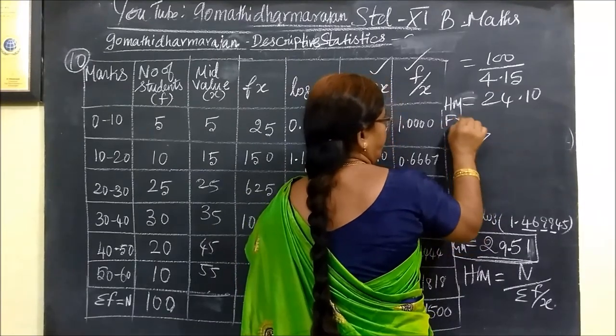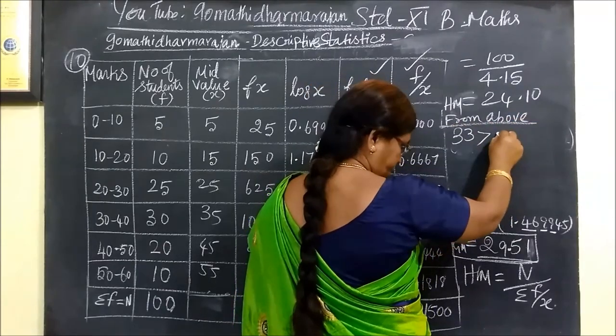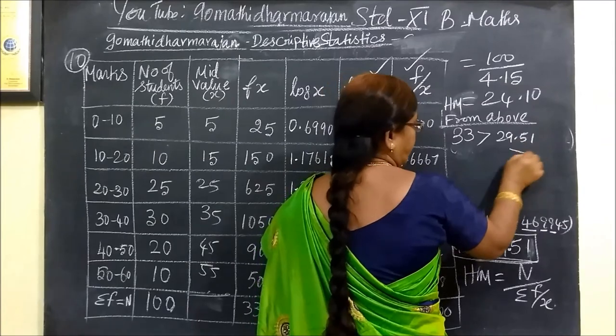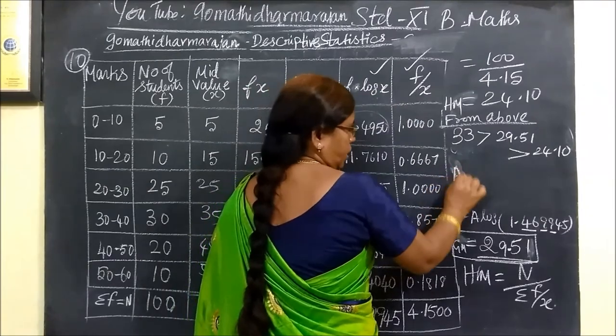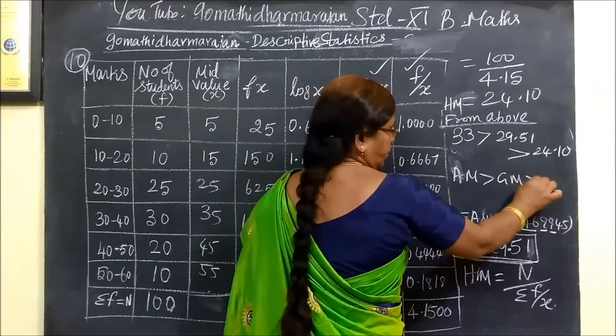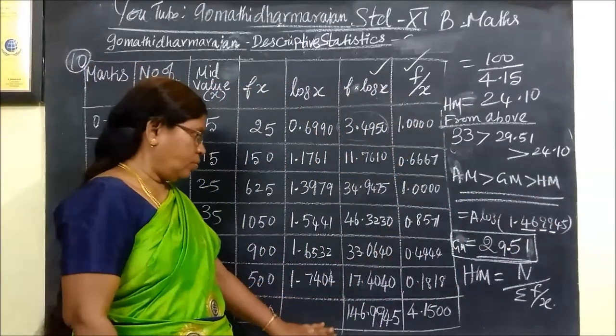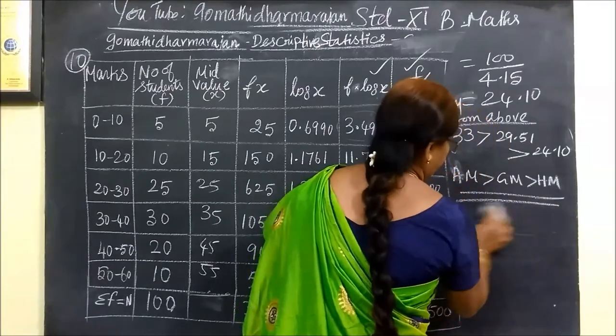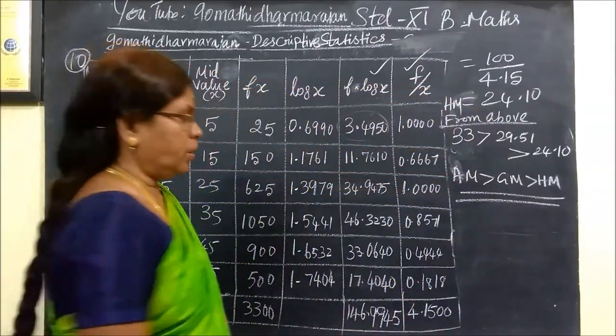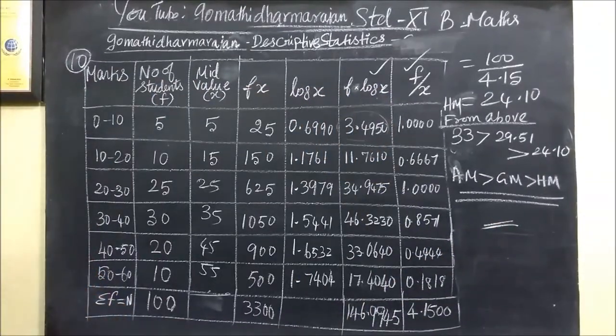From the above result, 33 is greater than 29.51, and that is greater than 24.10. That is, Arithmetic mean is greater than Geometric mean, which is greater than Harmonic mean. So, this result is already a standard result. That is what makes it easy. Thank you. Bye.